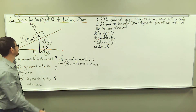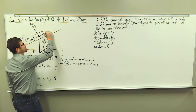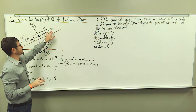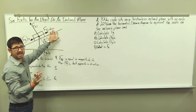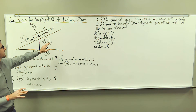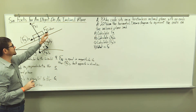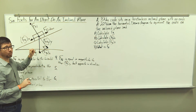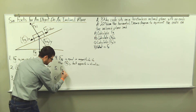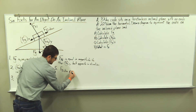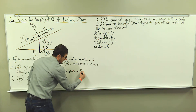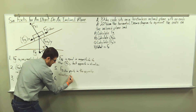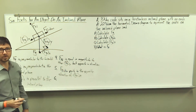Next we have the friction force, and we know that friction force always opposes motion. I'm going to label this with a subscript of friction — not specifying static or kinetic friction right now. The friction force points up the inclined plane, which is in the opposite direction of the X component of weight force. So the force of friction points in the opposite direction of the X component of weight force.